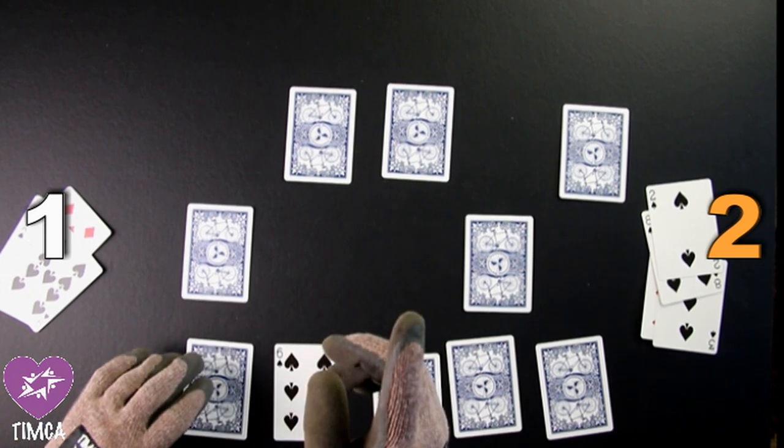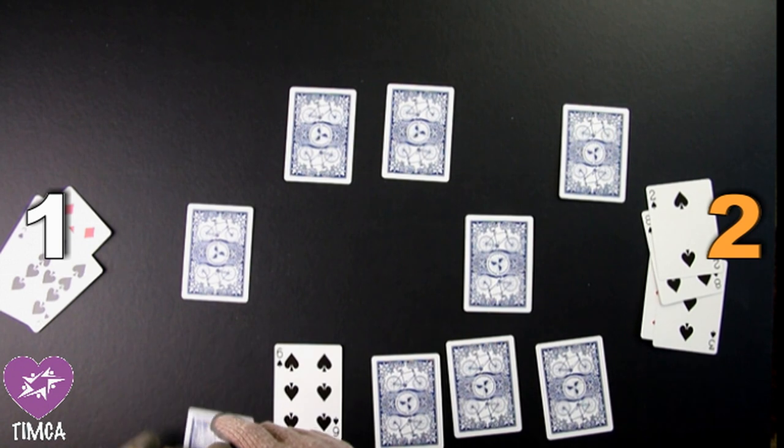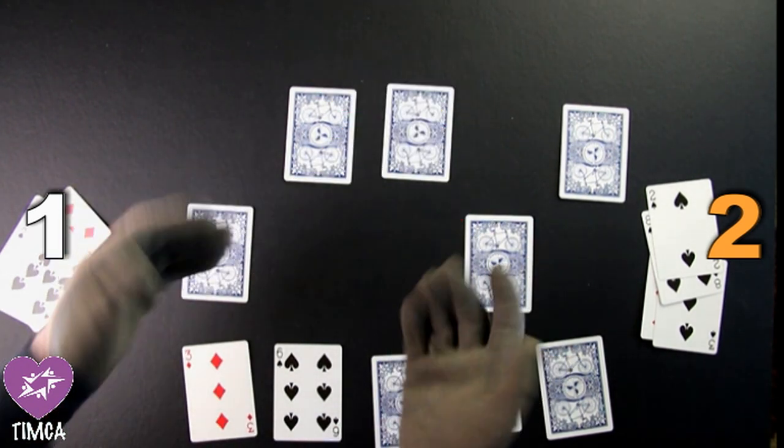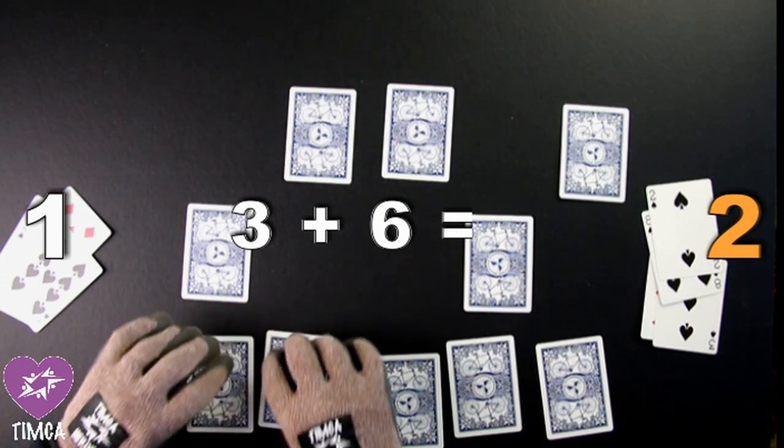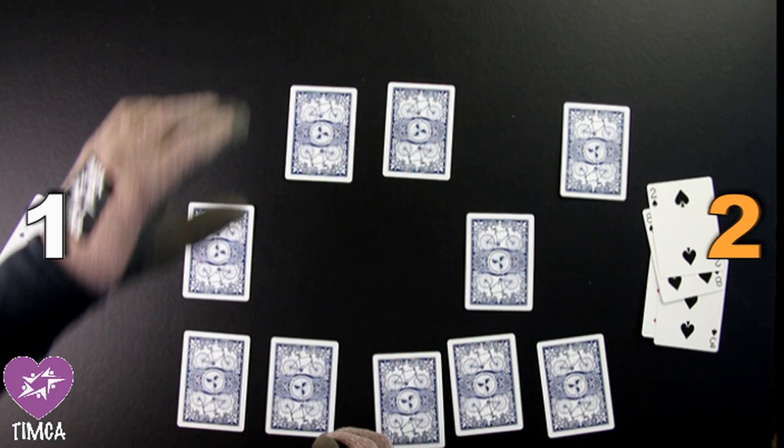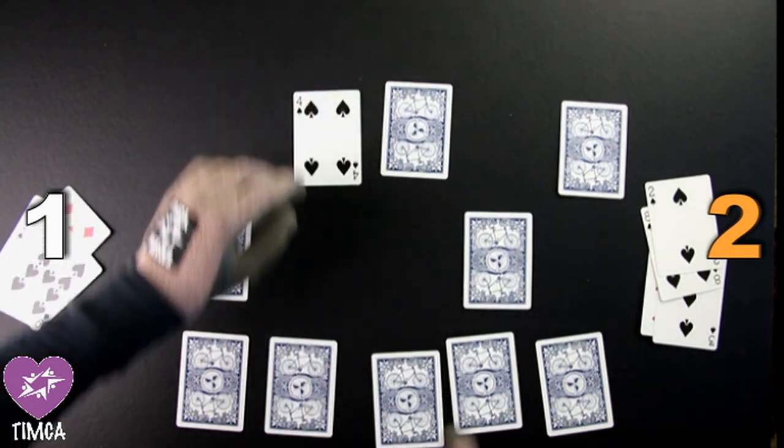Learner 1 has another turn. Can they get ahead? Learner 1 selects a 6 and is now looking for a 4. No, Learner 1. That is a 3. 3 plus 6 we know equals? Correct, equals 9.